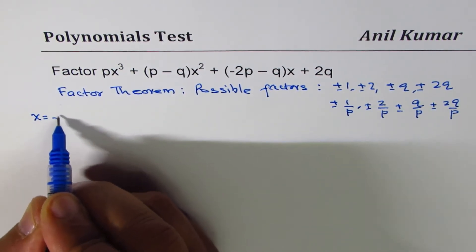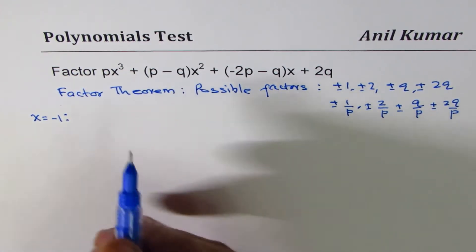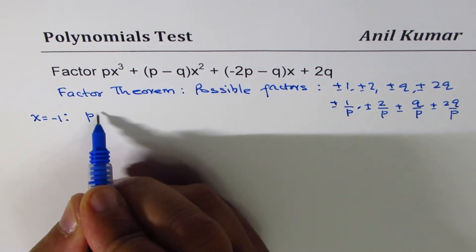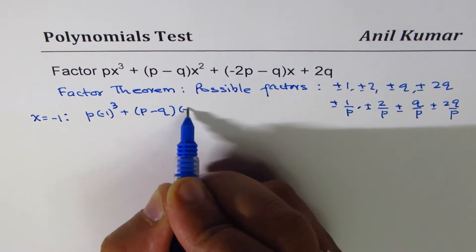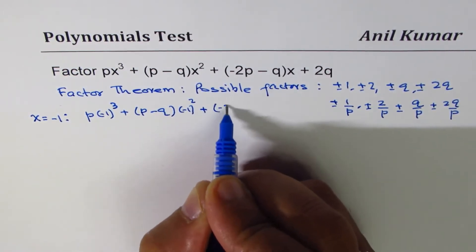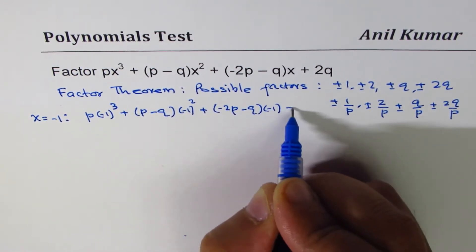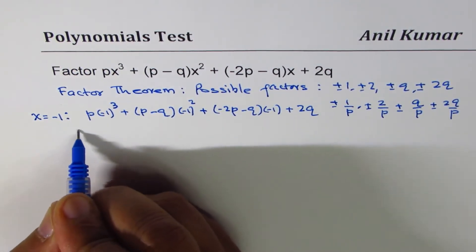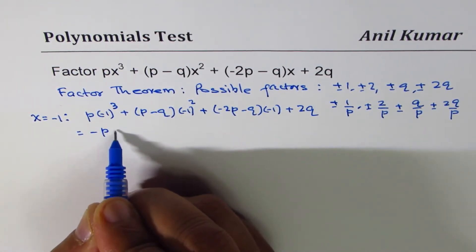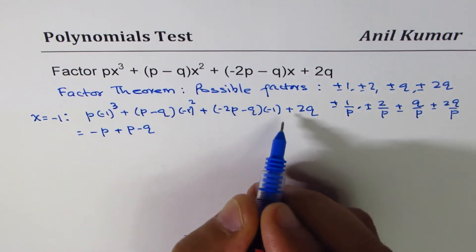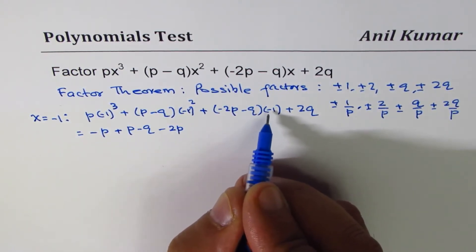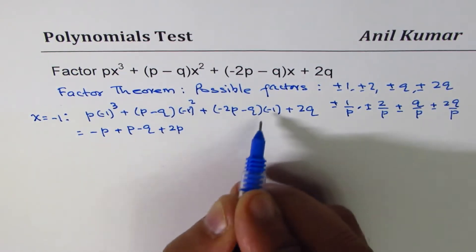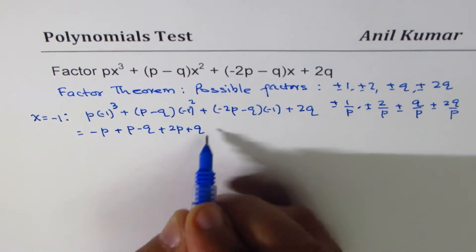So let's try substituting x = -1 and see if we get a 0. So if I write -1 here, I get p(-1)³ + (p - q)(-1)² + (-2p - q)(-1) + 2q. That gives me -p, and multiply this, this is a positive one, so we get +(p - q). When I multiply I get -2p, but this is minus so it becomes positive, so positive 2p, positive q.